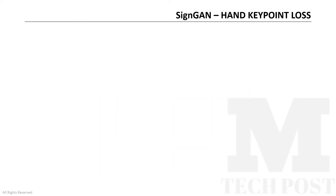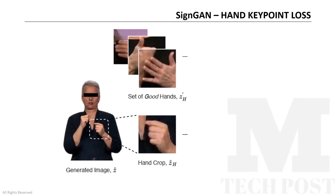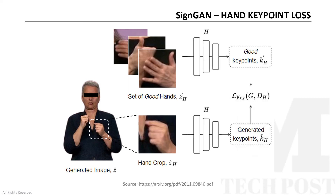Finally, to further enhance the quality of hand synthesis, the authors introduced the hand key point loss. First of all, a set of correct and good hand images is collected. Then, the generated images are cropped in order to obtain the hand regions. Hence, a pre-trained two-dimensional hand pose estimator is used to extract the hand key points from the good hands and the generated ones. During the training process, the purpose of the generator is to fool another discriminator, whose purpose instead is to distinguish between the key points of good hands from the key points of the generated hands.